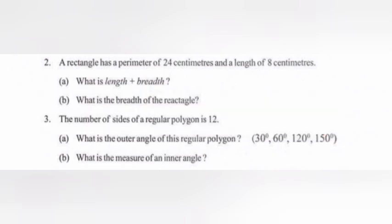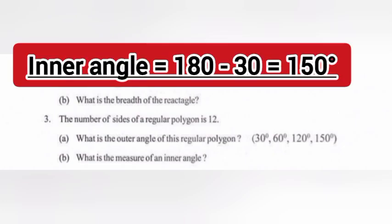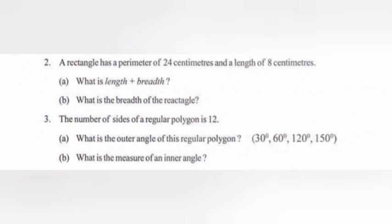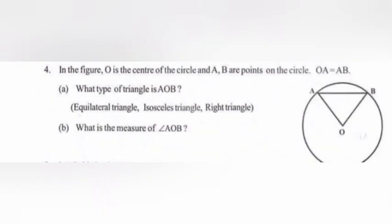B. What is the measure of an inner angle? Answer: Inner angle equals 180 minus 30 equals 150 degrees.